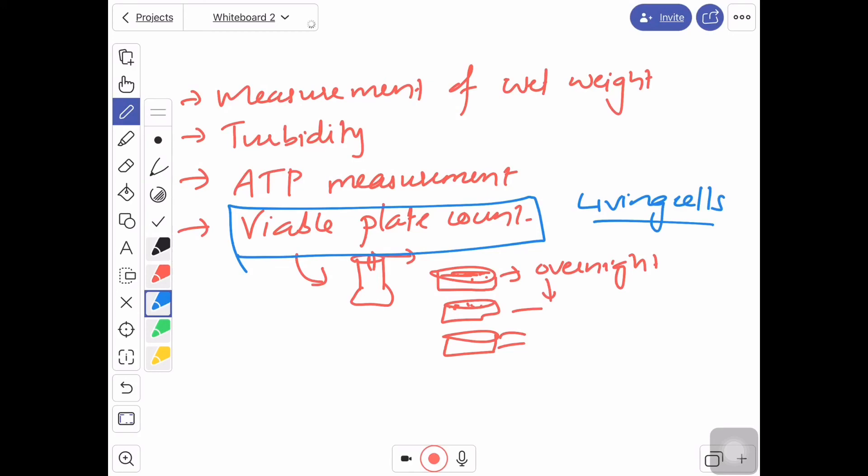Other methods will not give us only information about living cells. They give us information of only cells—they may be living or they may be dead. But viable plate count will give you exactly the information about living cells. So if we use such methods, they will give you exactly the amount of living cells.